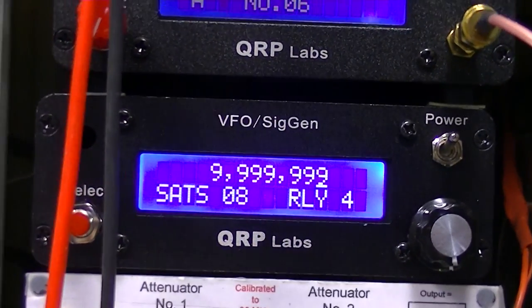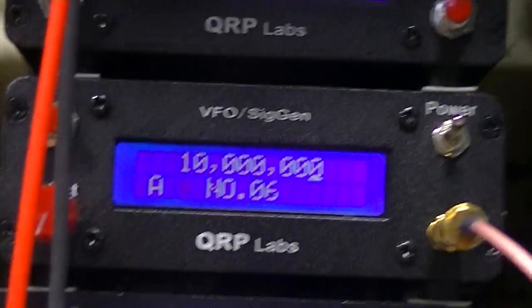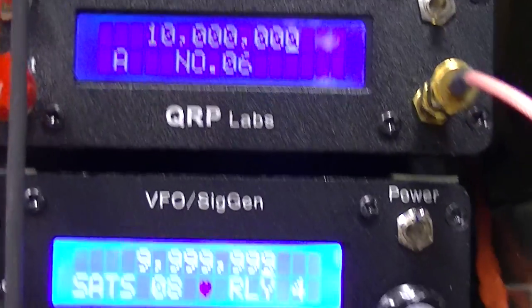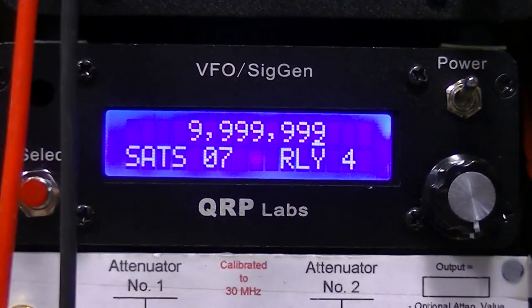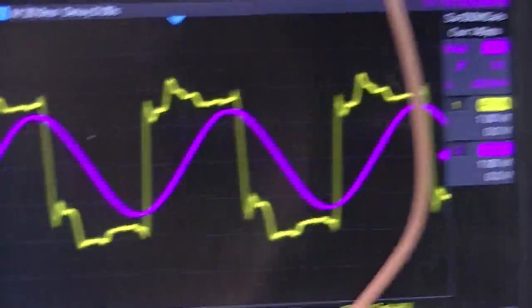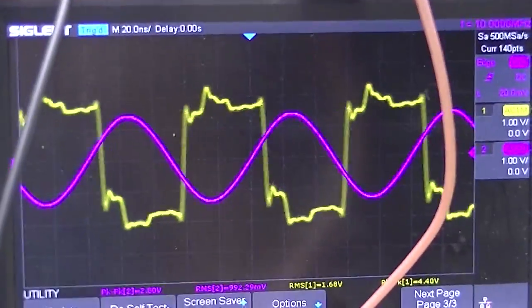And you see the lower ones at 9,999,999. The upper one is at 10 MHz. So they are a hertz off, a little bit less. Now I've set them both at 10.